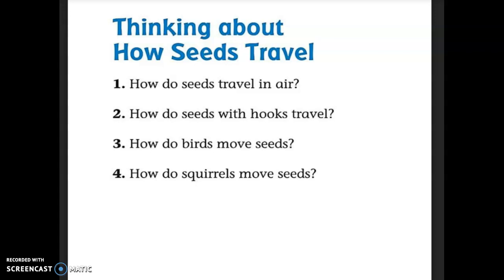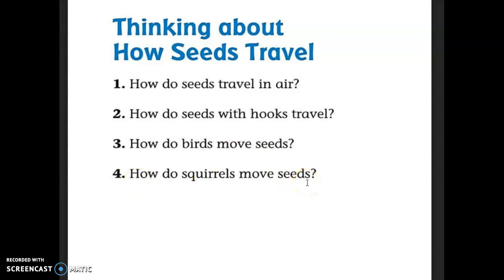I want you to pick one question and restate the question to answer it. Question number one: How do seeds travel in air? Question number two: How do seeds with hooks travel? Question number three: How do birds move seeds? Question number four: How do squirrels move seeds? Just pick one of these questions to answer and restate the question. For example, if you pick question number one — How do seeds travel in air? — you would say: Seeds travel in air by... and then finish your sentence with the answer.